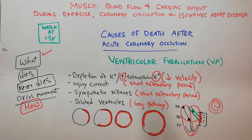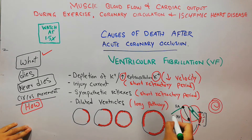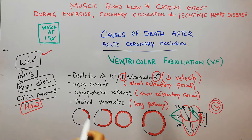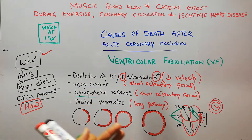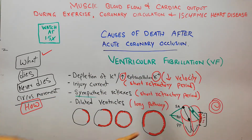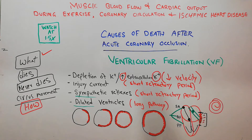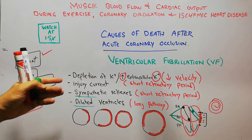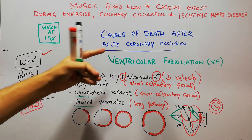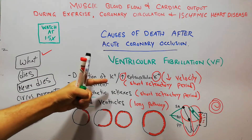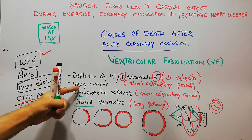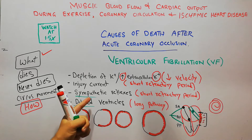When there is no cardiac output, the sympathetic system gets activated — the SA node, AV node, and muscles are activated through sympathetic nerves, which also leads to ventricular fibrillation. Fourth, due to damage from the acute coronary occlusion, the ventricles may be dilated, and dilated ventricles also fulfill a condition which leads to VF. So the four basic conditions are: potassium depletion, current of injury, sympathetic reflexes, and dilated ventricles.